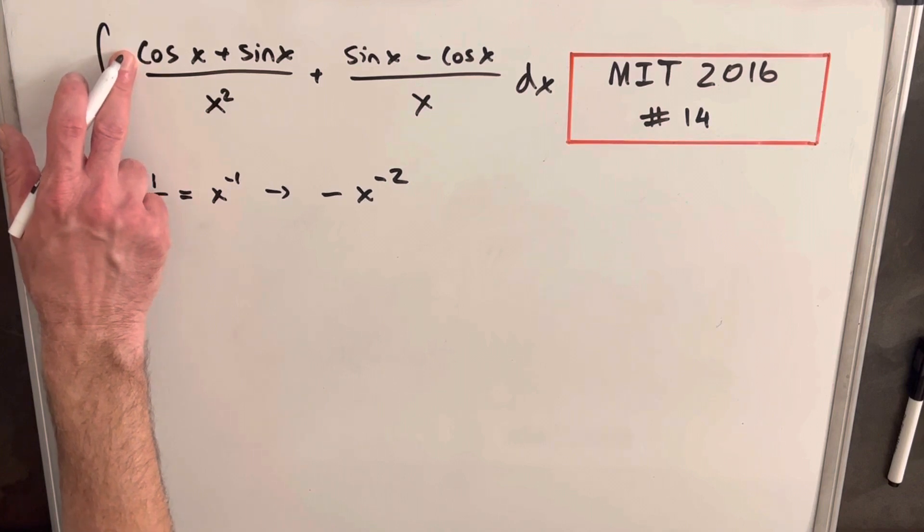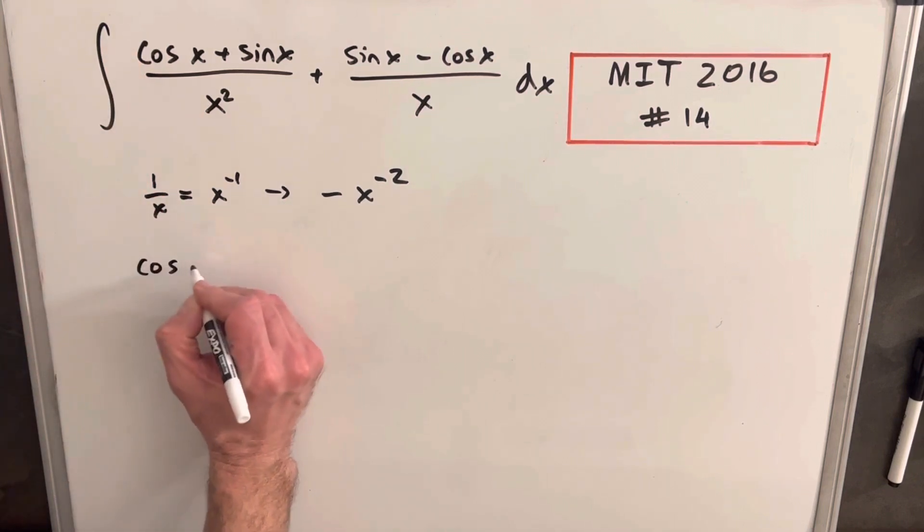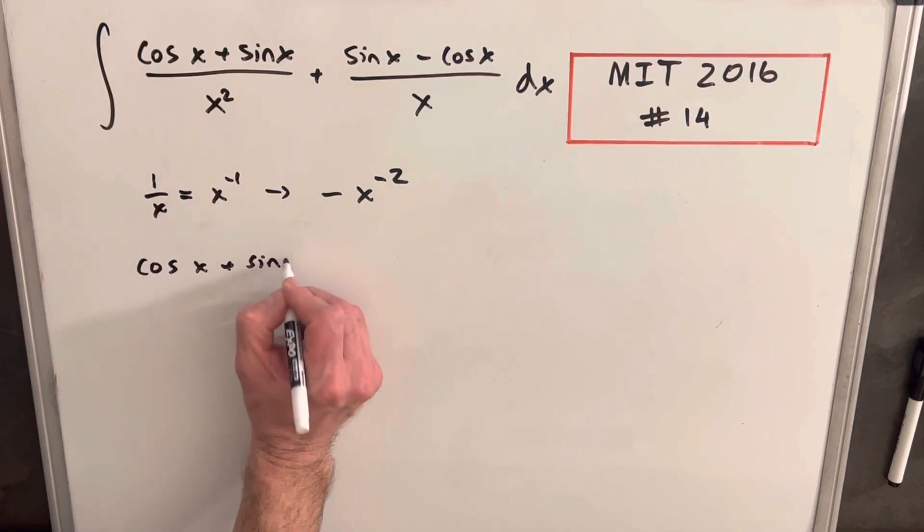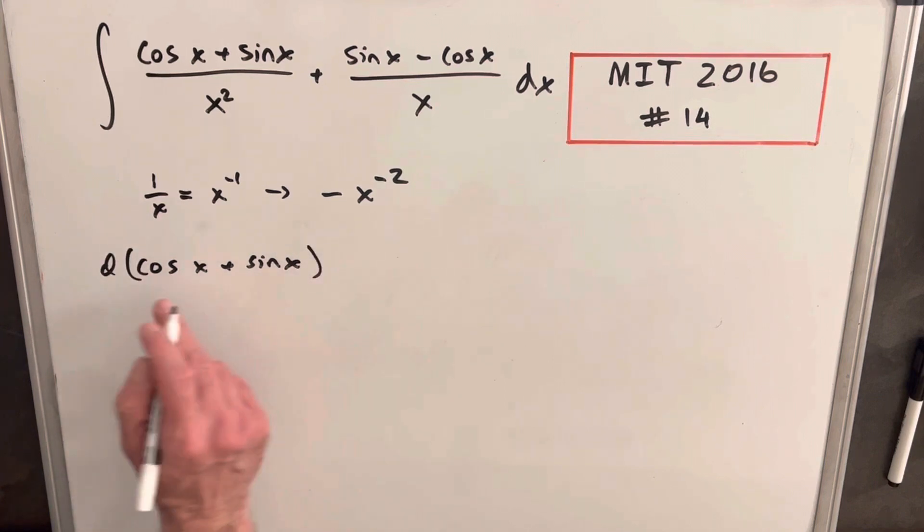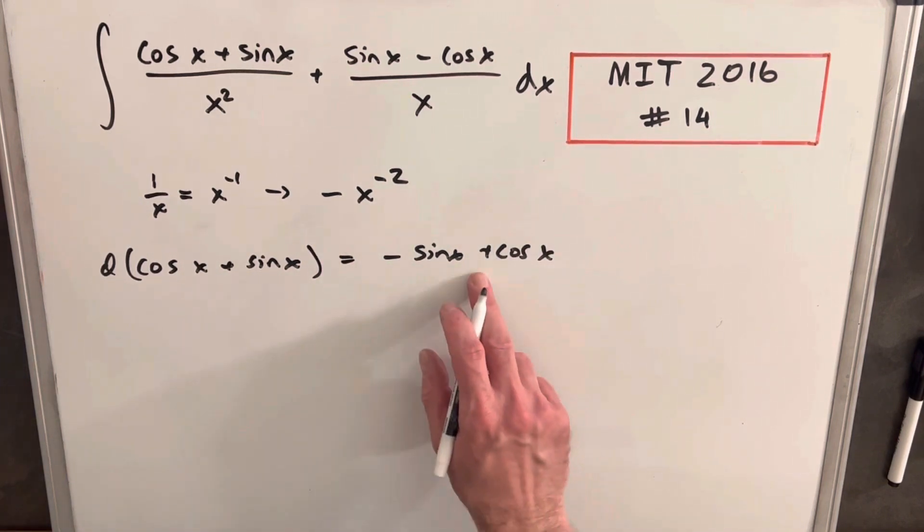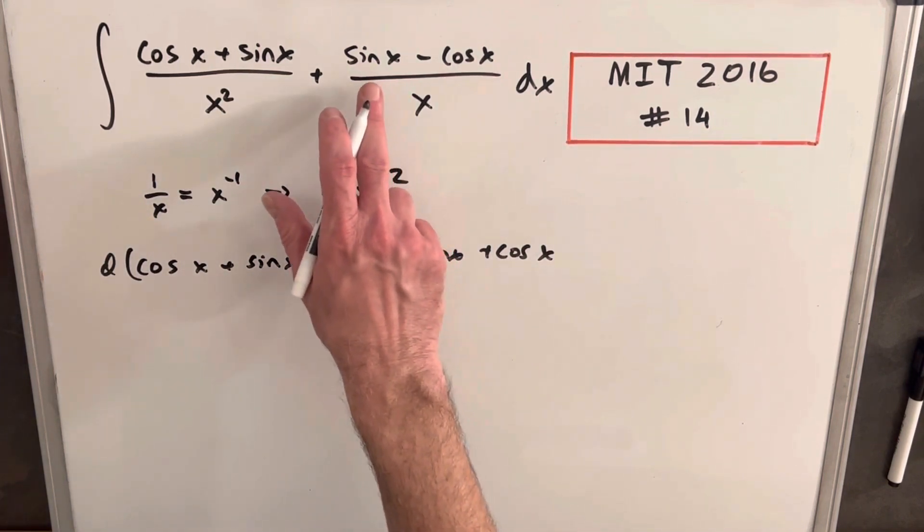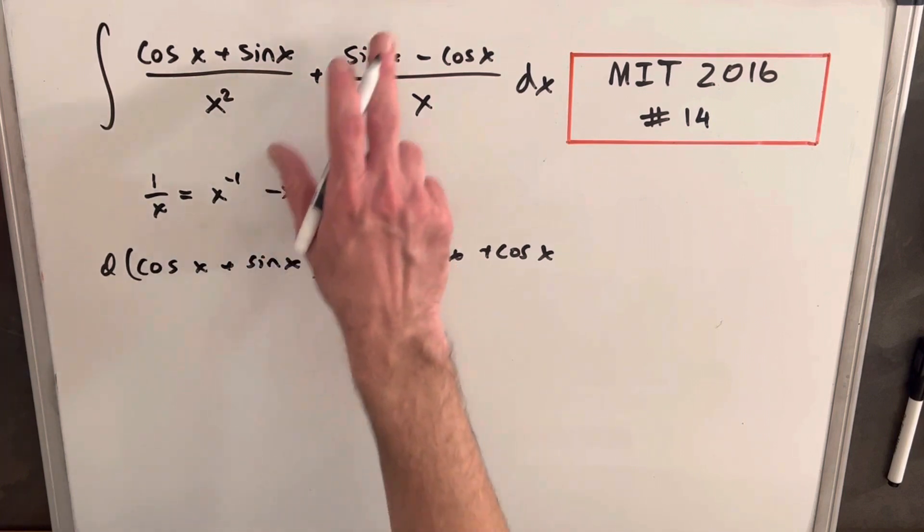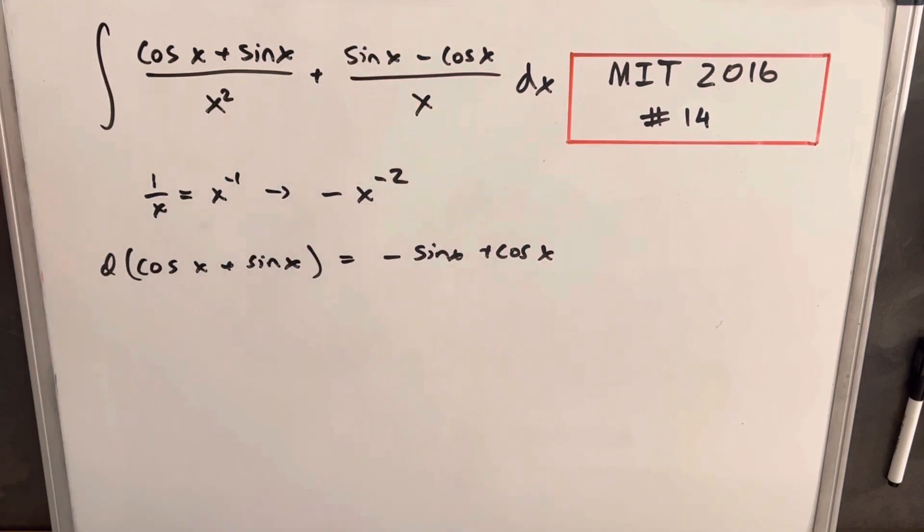And then if I take cos x and sine x, let's get the derivative of that. Derivative of cosine is minus sine x. Derivative of sine x is cos x. So again, we just have the negative. This is very close to what we have here, just this times minus 1.